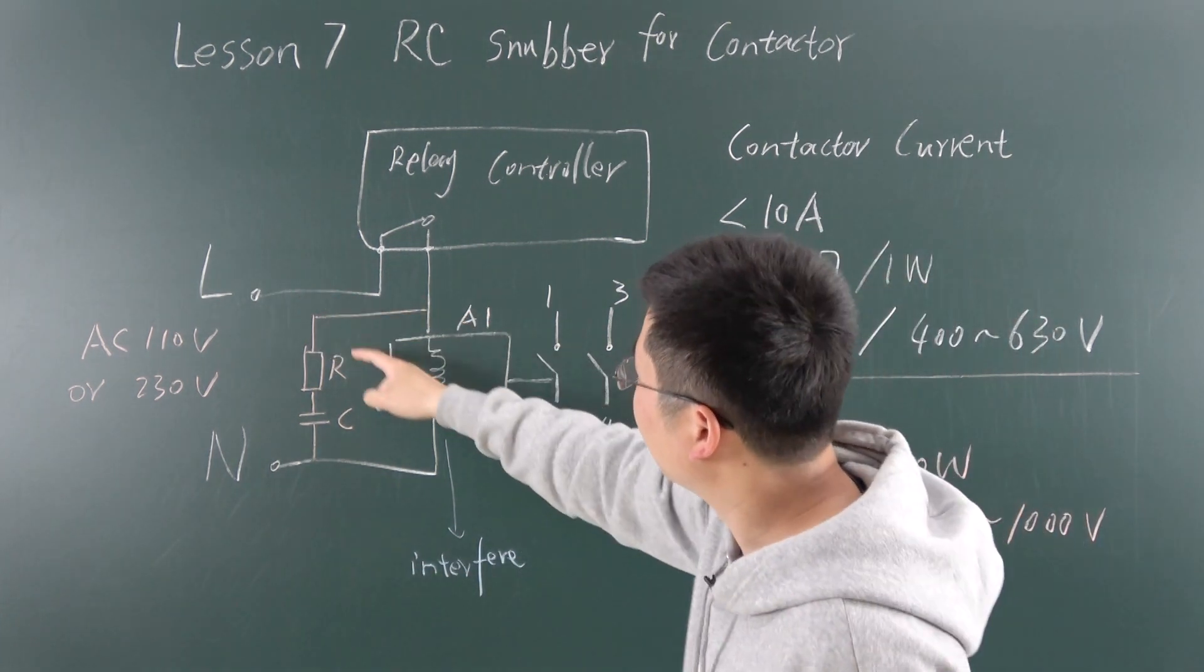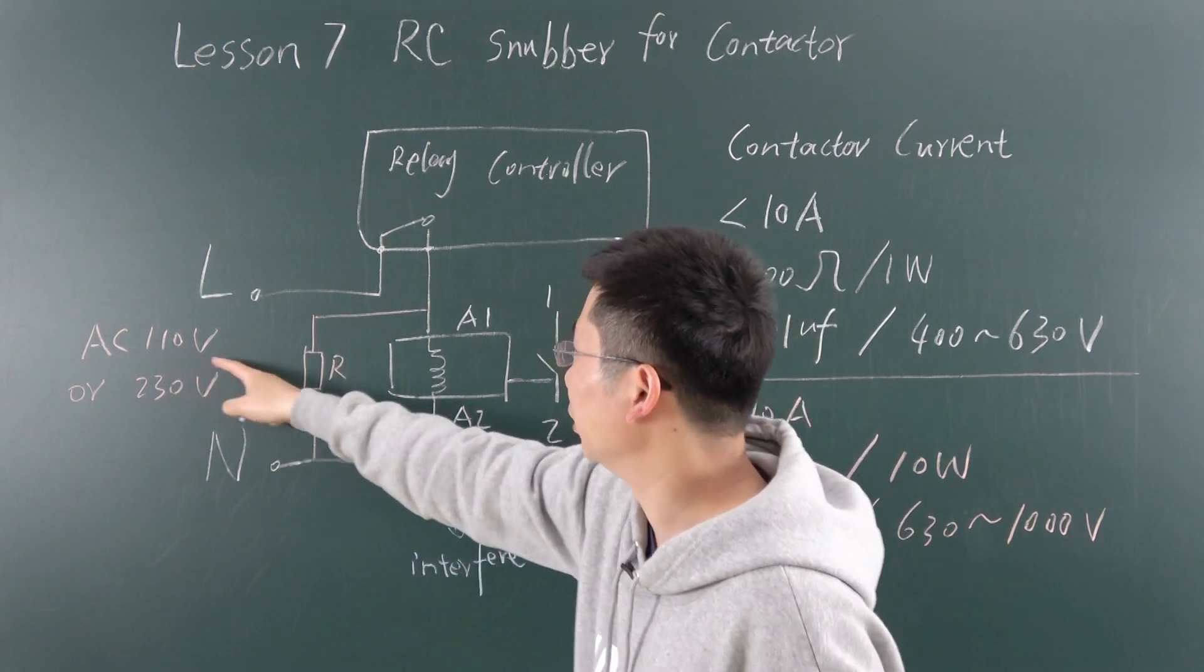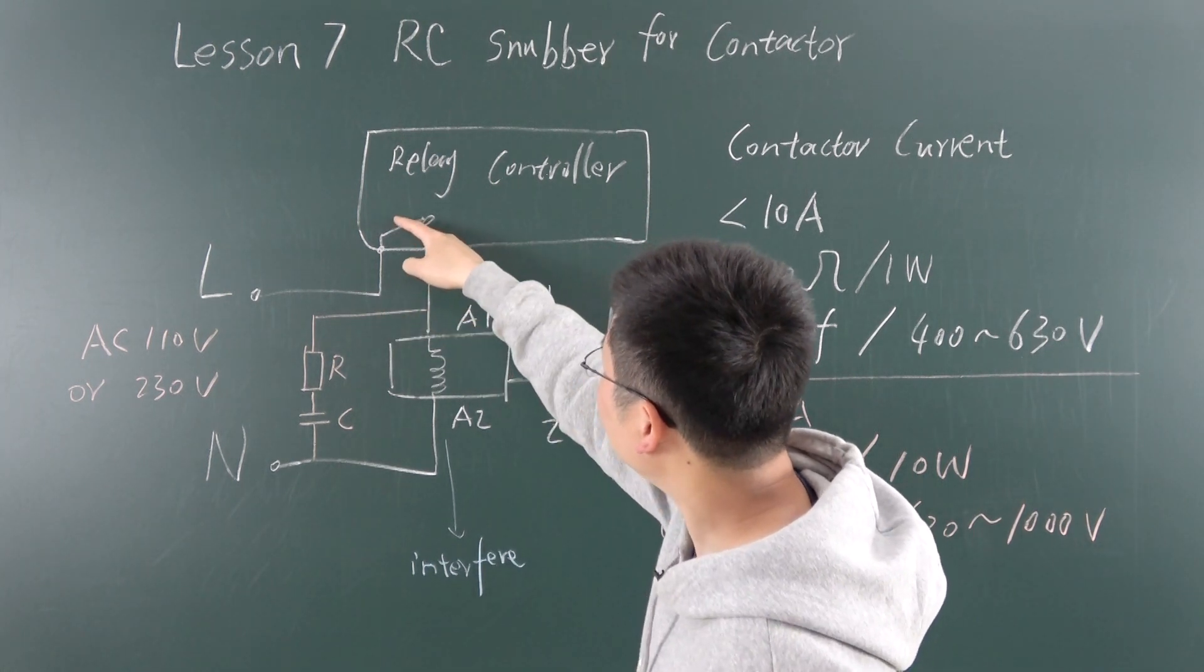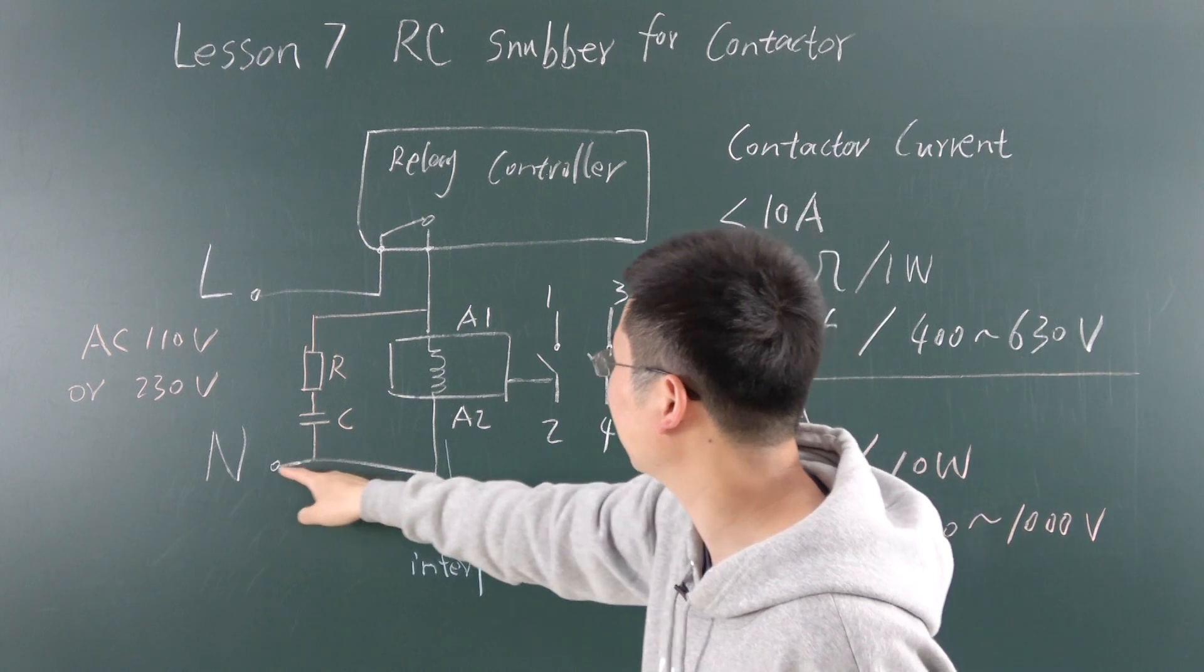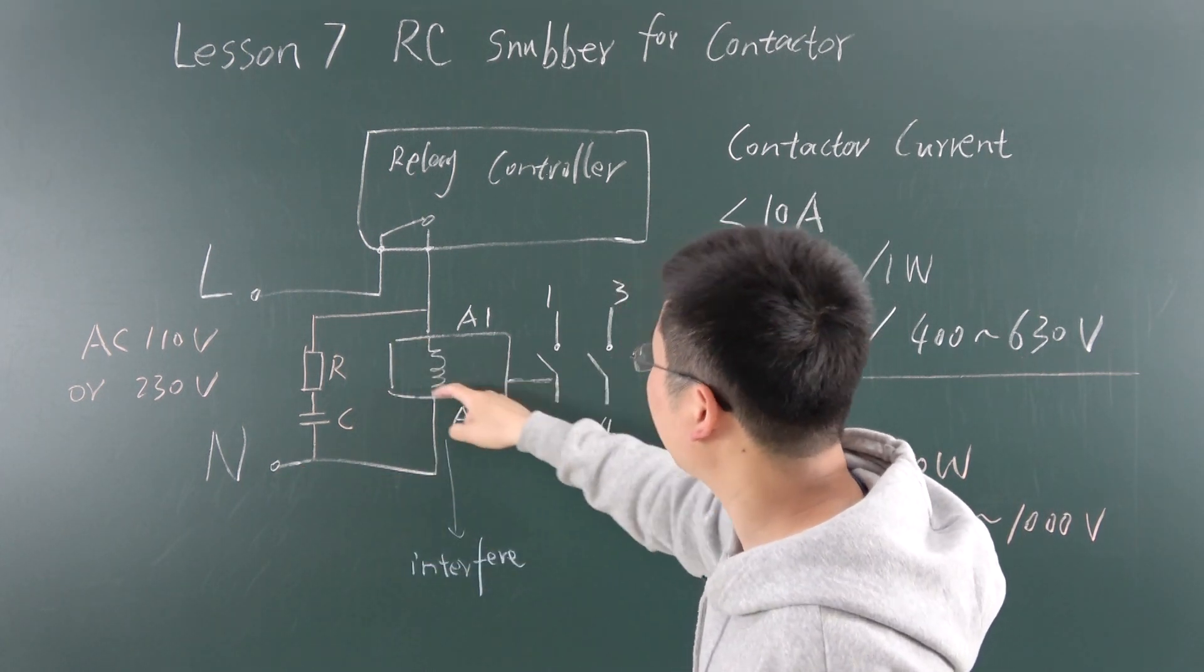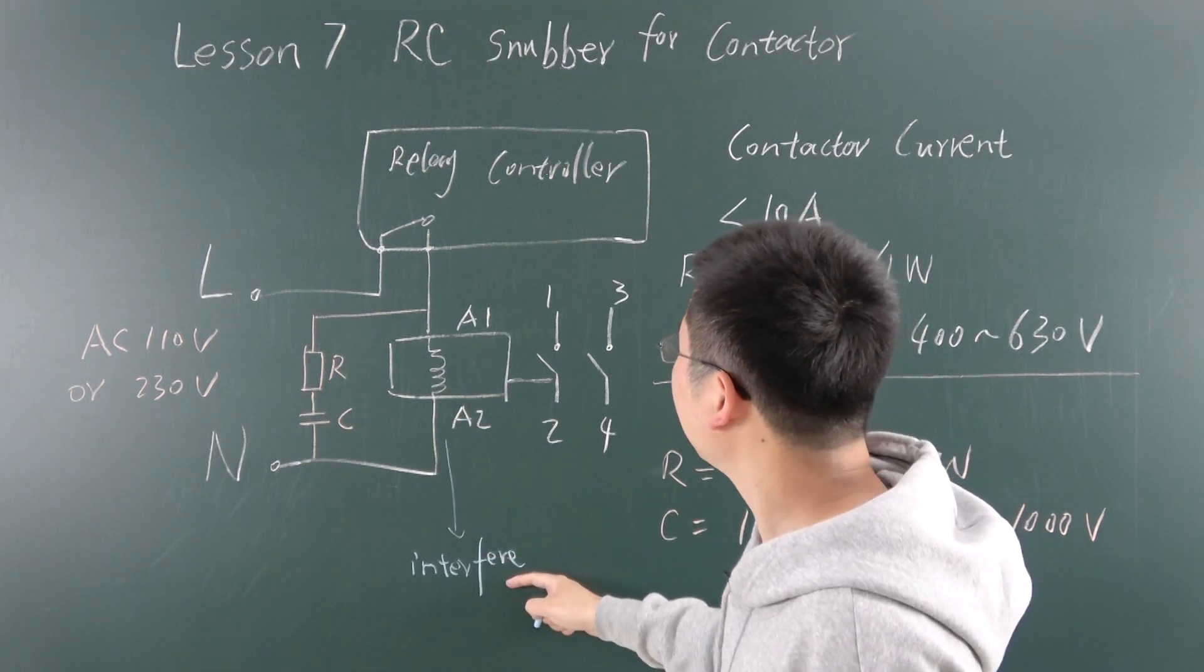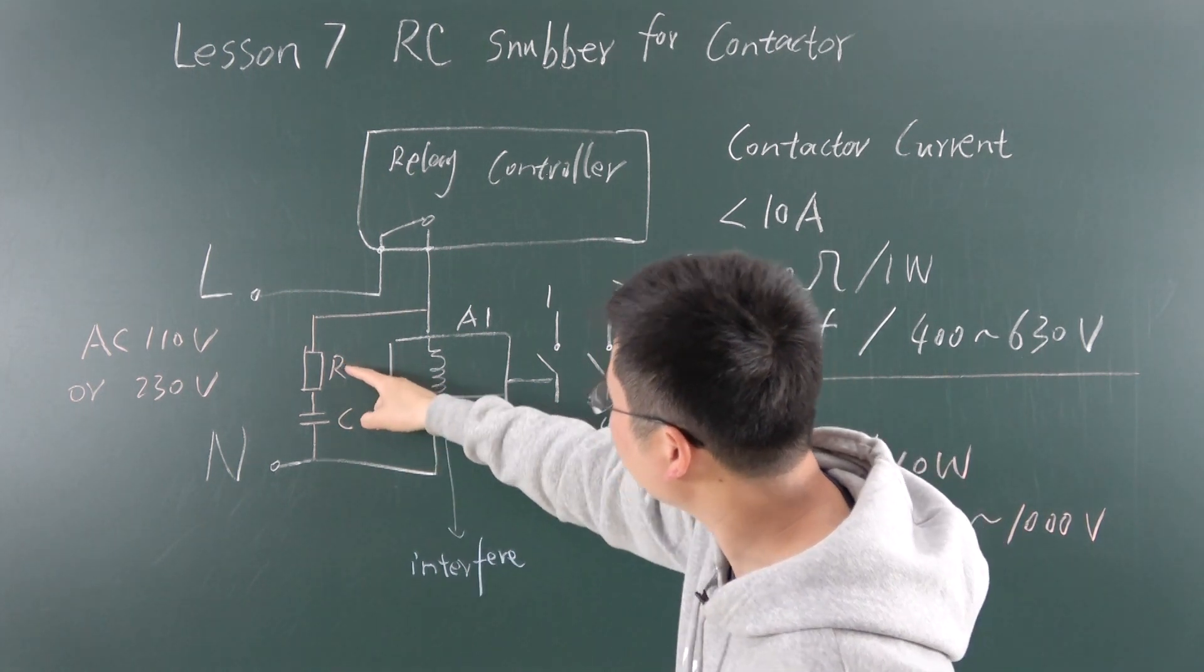You can see this diagram. This is L and neutral at 110V or 220V. It goes to the relay switch, through the coil inside, and to neutral. This will generate very large interference.